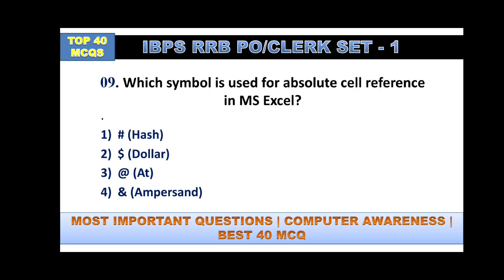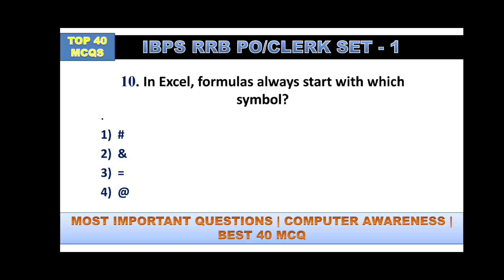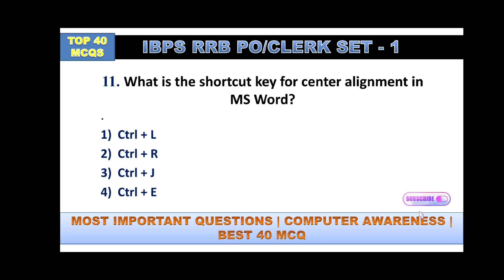Which symbol is used for absolute cell reference in MS Excel? It is the dollar sign — option number two. In Excel, formulas for addition, SUM, or AVERAGE always start with the equal-to sign.